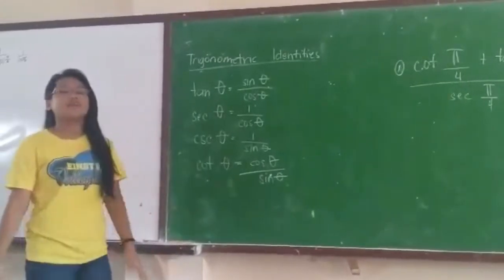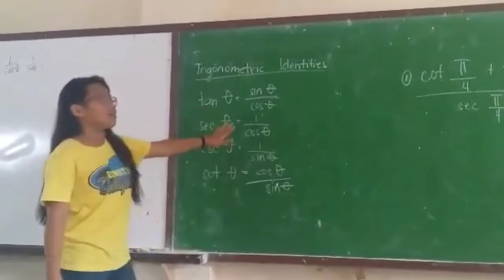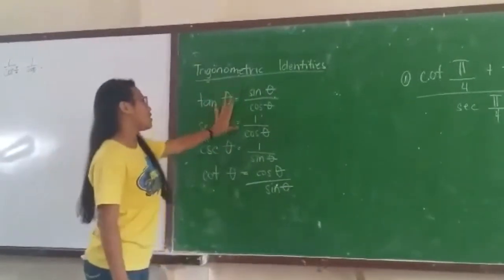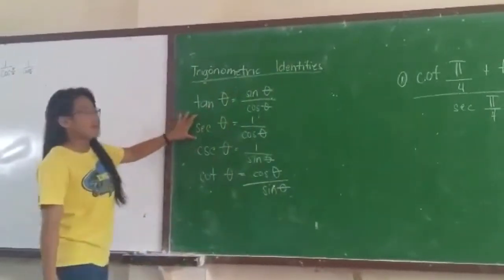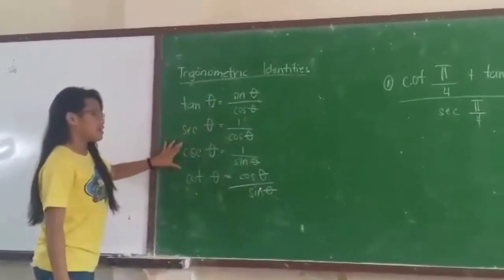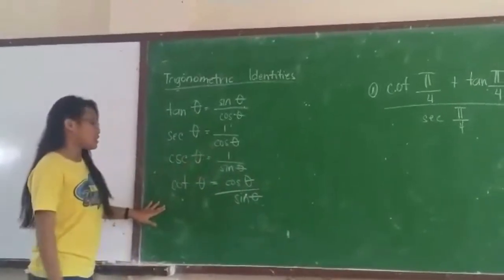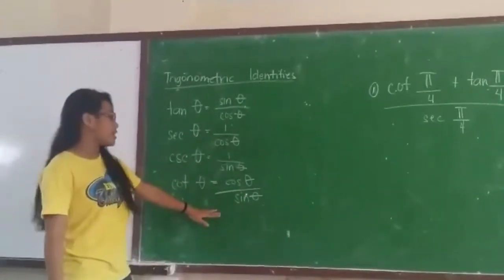Now let's review trigonometric function formulas. To get tan θ, the formula is sin θ over cos θ. For sec θ is 1 over cos θ. Csc θ is equal to 1 over sin θ. And cot θ is equal to cos θ over sin θ.